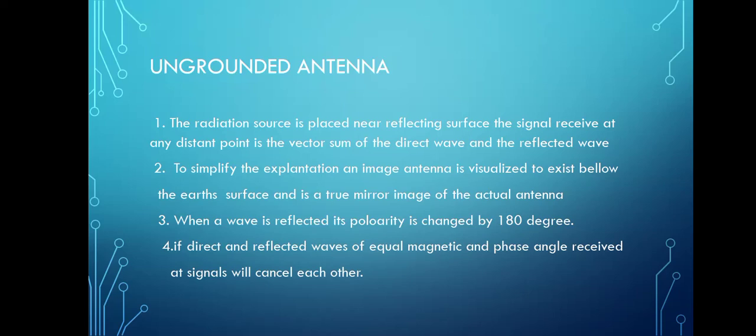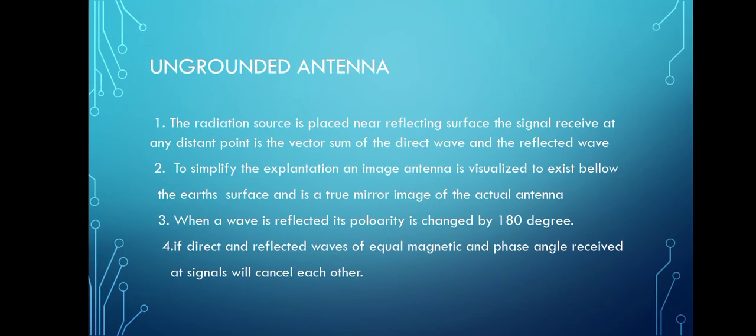Today's topic is ungrounded and grounded antennas. The first topic is the ungrounded antenna, where the antenna's directed ray is reflected to the ground surface and an image is created. When a radiation source is placed near a reflecting surface, the signal received at any distant point is the vector sum of the direct wave, called the incidence wave, and the reflected wave.